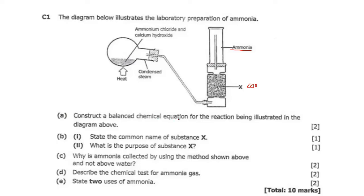Question (a) asks you to construct a balanced chemical equation for the reaction. Question (b) asks for the common name of substance X — calcium oxide — whose common name is quicklime. The purpose of substance X is to act as a drying agent. They also ask why ammonia is collected by downward displacement of air and not over water. Ammonia is collected by downward displacement of air because it is less dense than air, and it is not collected over water because it dissolves in water.